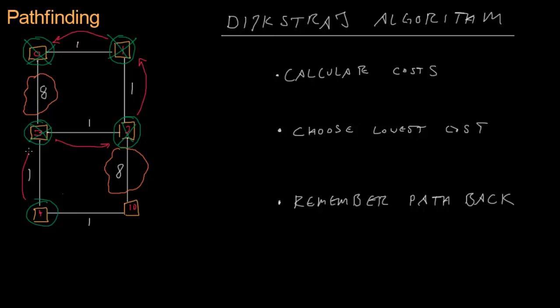We see that we don't need the cost-10 route when we could reach that node for cost 4 plus 1 equals 5. That's our final jump in this graph. We remember the path back, and by following the path backwards we reconstruct the route. The total cost is 5, much better than the original cost of 17 — that would have been 8 plus 1 plus 8 — so we did much better.